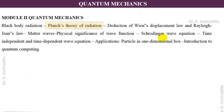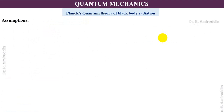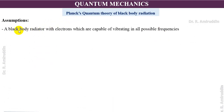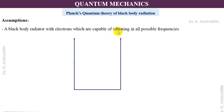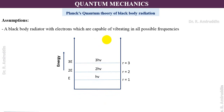Planck derived a theory of radiation for the blackbody called Planck's quantum theory of radiation. He assumed that the perfect blackbody contains electrons capable of vibrating at all possible frequencies. The energy associated with these electrons is not continuous but discrete. The energy levels are: E = hν, 2hν, 3hν, 4hν, and so on up to level r, which is rhν.